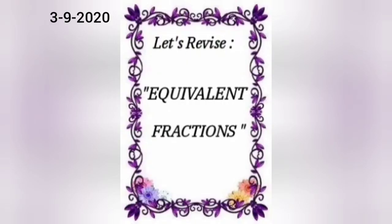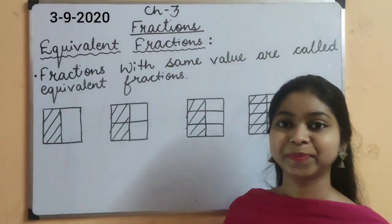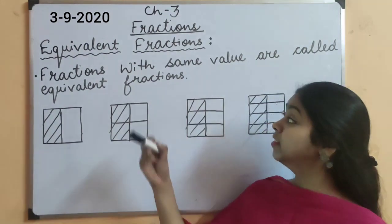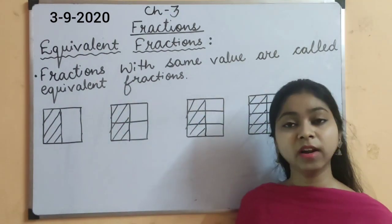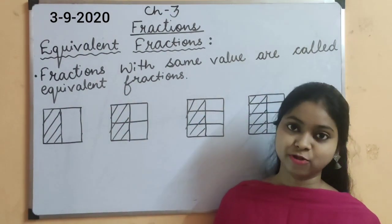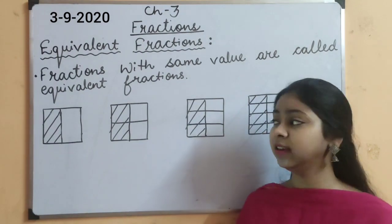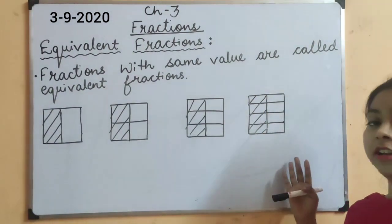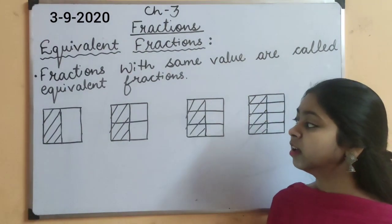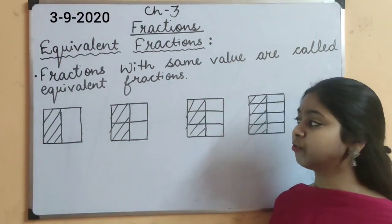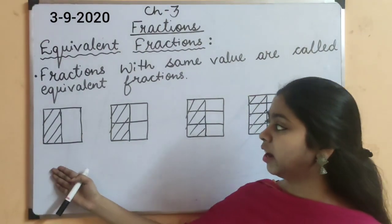Let's revise our concept. Fractions with same value are called equivalent fractions. Like, if you can see, there are 4 chocolates kept in front of you, and each chocolate is given to different different child. Like, the first child.